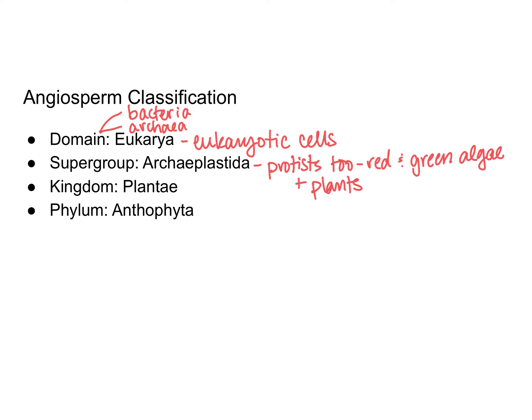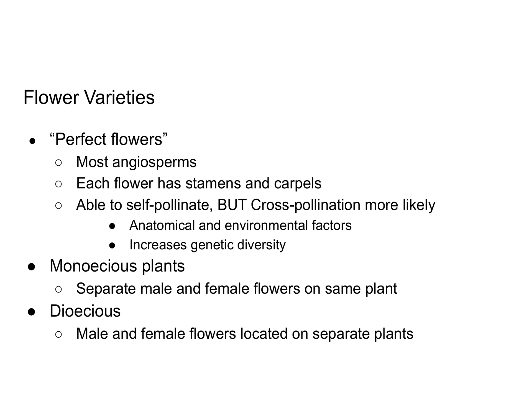Plants are in kingdom Plantae, which makes sense. And then all angiosperms are in the same phylum known as Anthophyta. Most angiosperms have what we call perfect flowers. A perfect flower doesn't mean that it's the most beautiful — it just means that each flower has both the male and female parts. So if a flower contains both stamens and carpels, it is called a perfect flower.